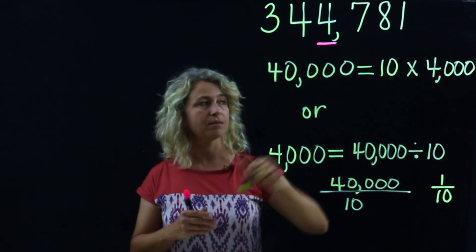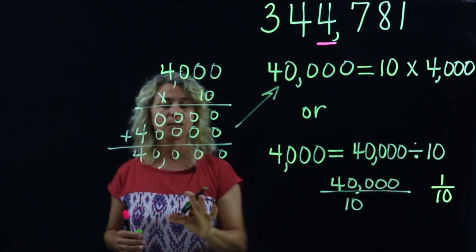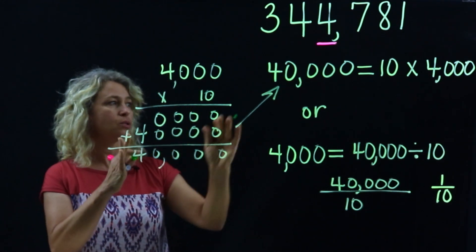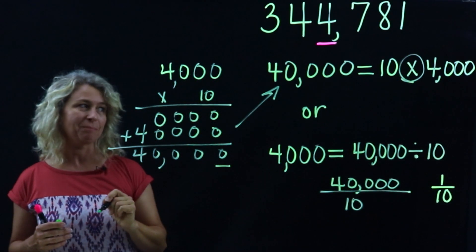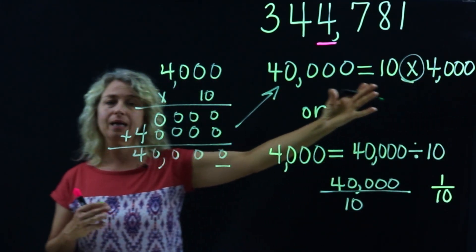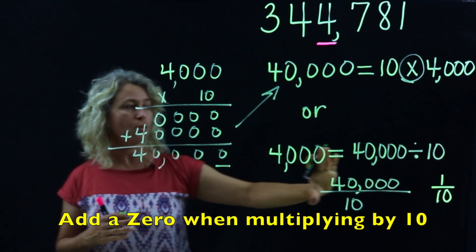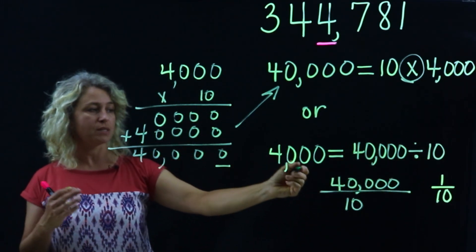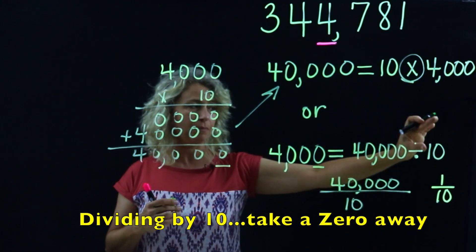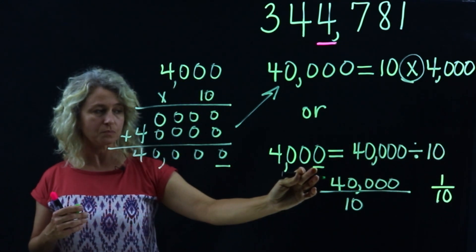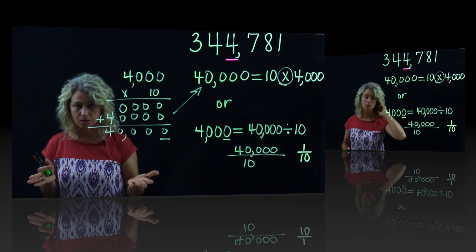We actually use mental math to work this out. Notice when we multiply by ten, we're adding one zero. And when we divide by ten, we take one zero away. So forty thousand divided by ten — you're just taking one zero away. That mental math will make it faster using those skills.